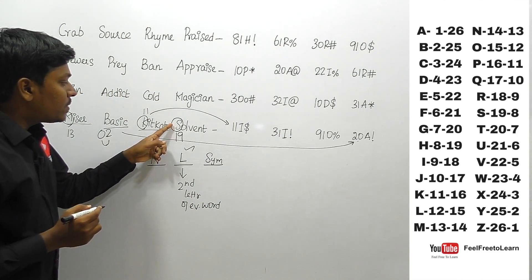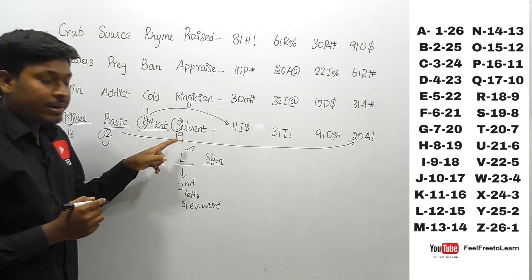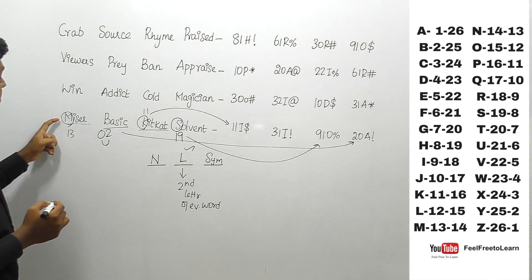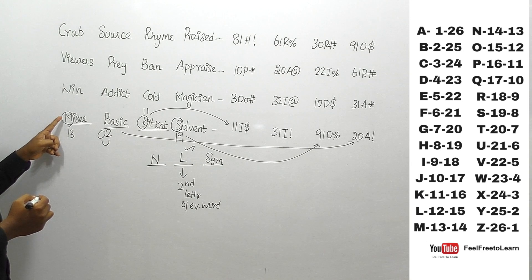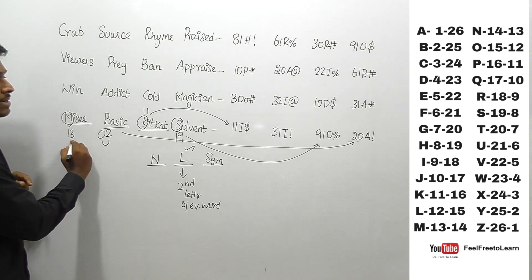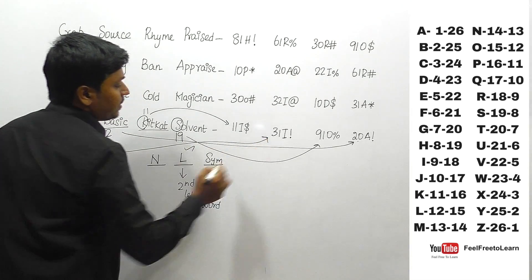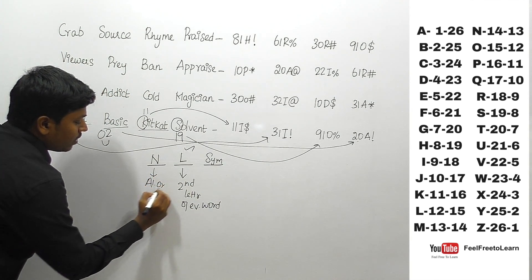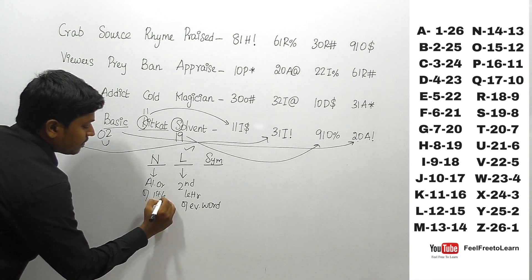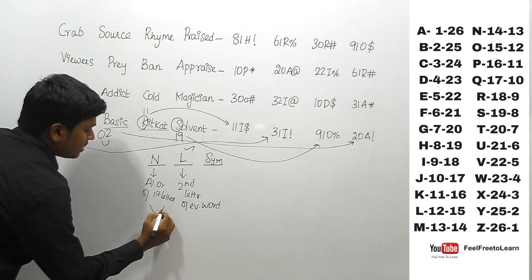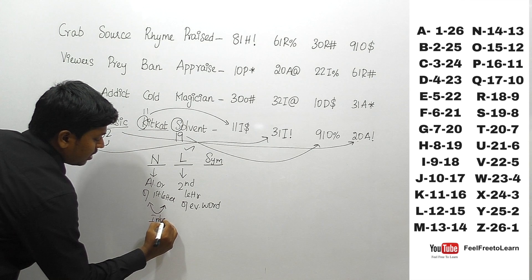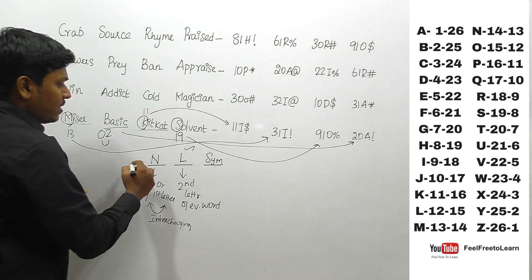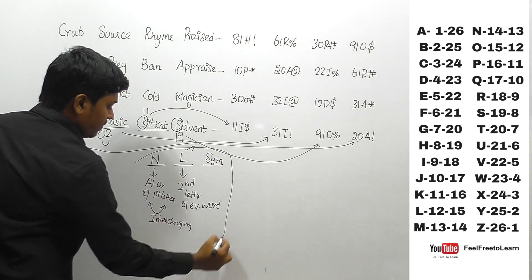To confirm: for 'solvent', first letter S = 19 alphabetically, reversed to 91. For 'miser', M = 13, reversed to 31. So the rule is: alphabetical order of the first letter, then interchange (reverse) the digits. That is the key rule for the number part. Always remember to write this down in exams — it will help you a lot.